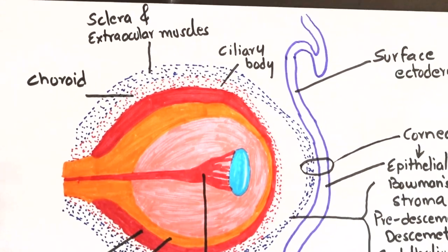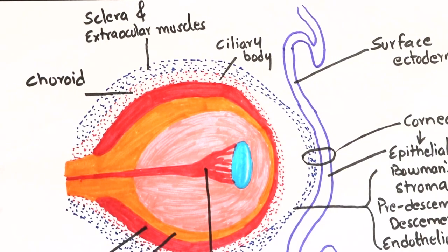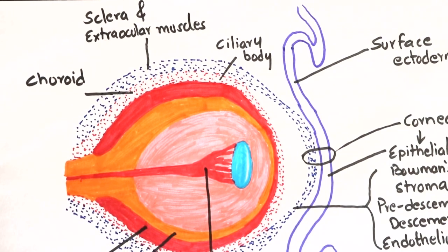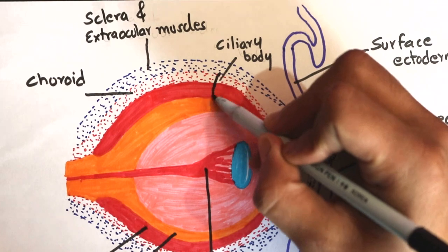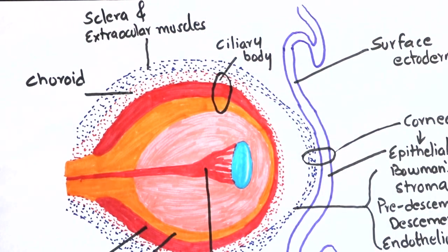I said earlier that the ciliary body is formed from vascular mesenchyme. However, it is not completely true. The vascular mesenchyme forms the stroma of the ciliary body, ciliary muscles, and blood vessels. The two layers of the optic cup form the epithelium of the ciliary body.